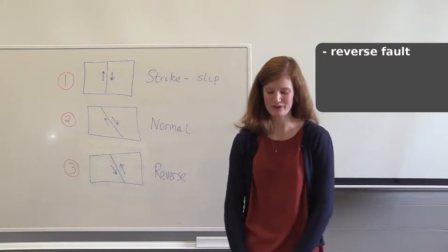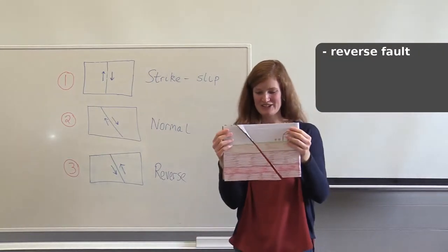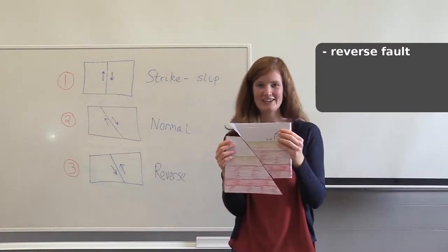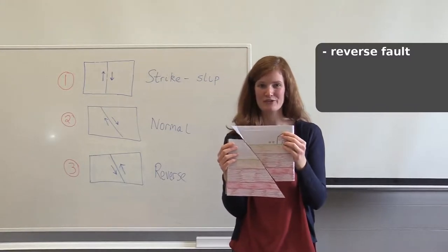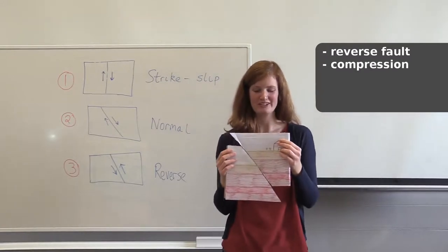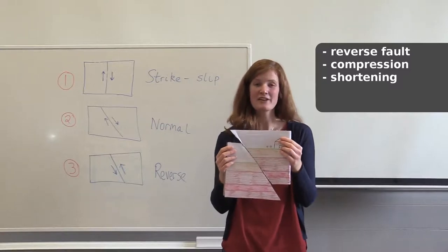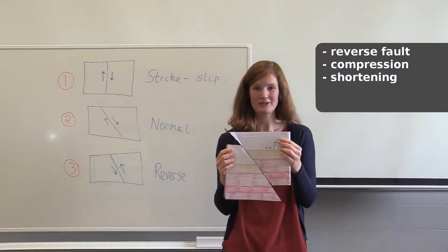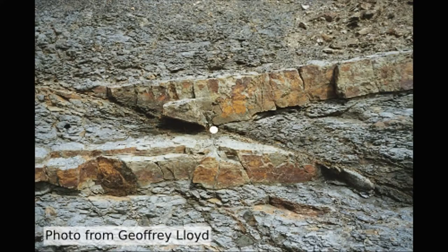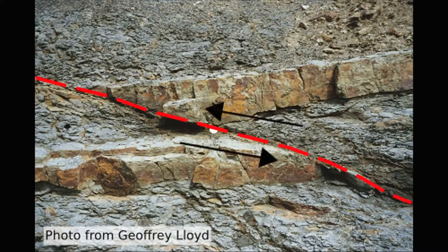Group three made a reverse fault. In your case, the rock above the fault moved up the slope, and you can see that the horizontal layers have been offset from each other. The type of stress associated with a reverse fault is compression, and this causes shortening. The type of plate boundary associated with this kind of fault is convergent, and this is what causes mountains. Here is a picture my colleague Jeff took in Pembrokeshire in Wales — like in your model, there are horizontal layers of rock and the rock above the fault has moved up the slope. This is a reverse fault, just like the one you've made.